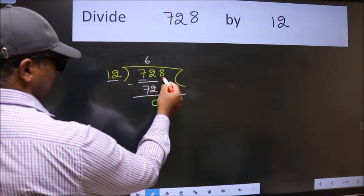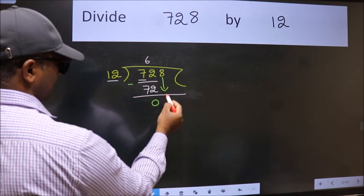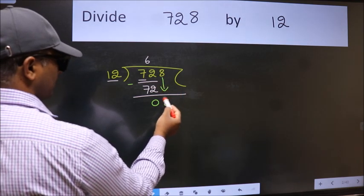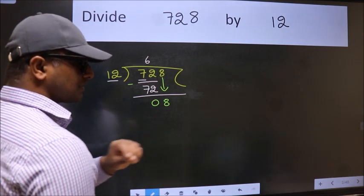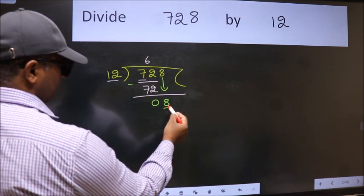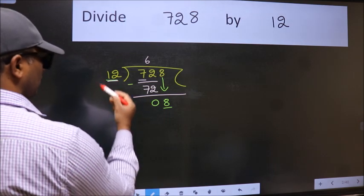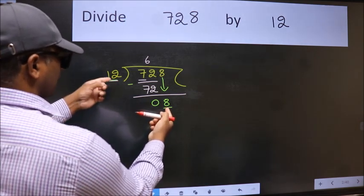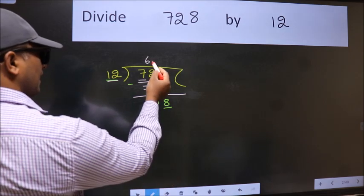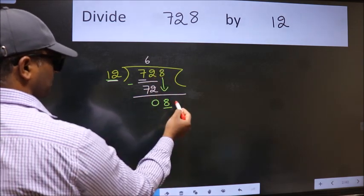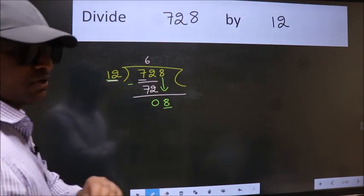After this, bring down the beside number 8 down. After this step, the mistake happens and the mistake is this. Here we have 8 and here 12. 8 is smaller than 12. So what many do is they directly put dot, take 0, which is wrong.